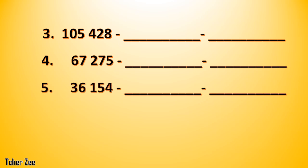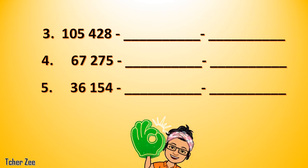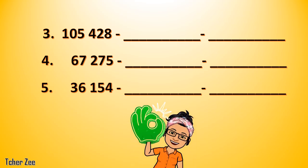Okay, and finally for number 5 — that's 36,154. Have you found 5? Okay, very good. Now what is the place value of 5? Write the place value of 5. If you're done, write its value. What is the value of 5? Don't forget to submit your work to your teacher. She will be checking your work for today.